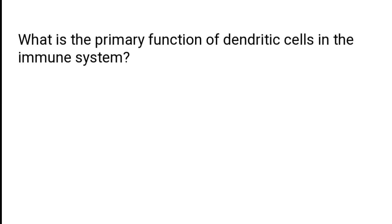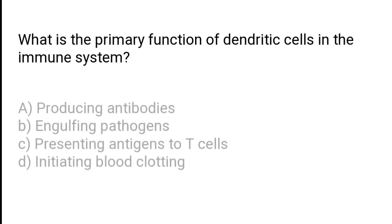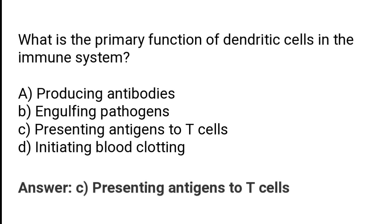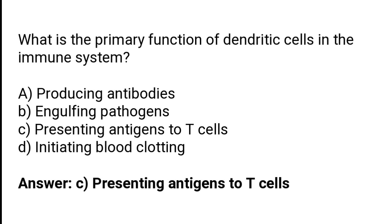What is the primary function of dendritic cells in the immune system? The primary function of dendritic cells in the immune system is presenting antigens to T cells, initiating blood clotting, or other functions. The correct answer is option C — the primary function of dendritic cells in the immune system is presenting antigens to T cells.